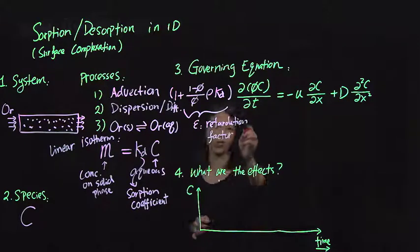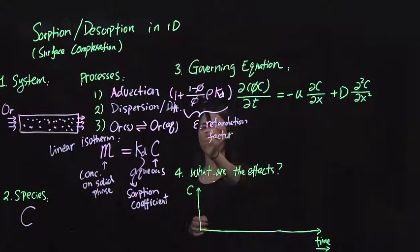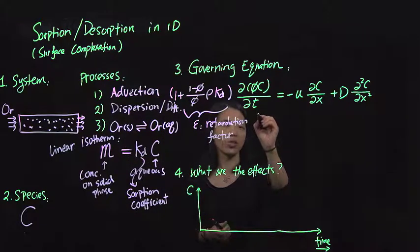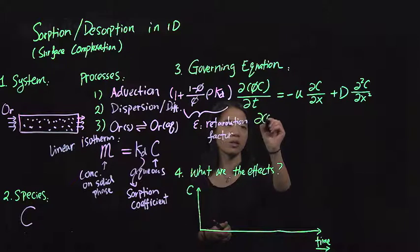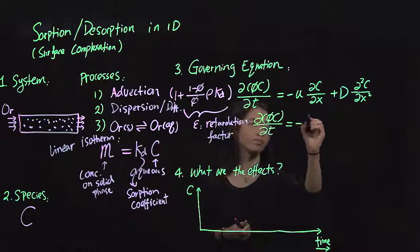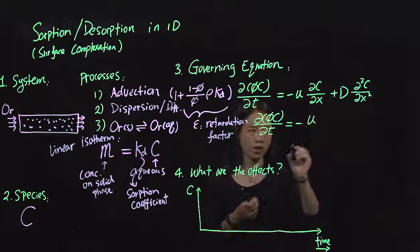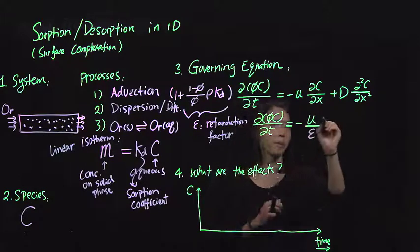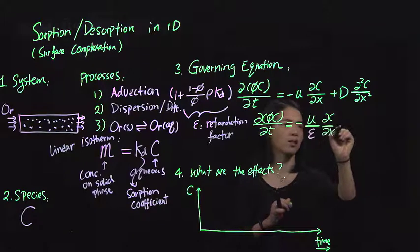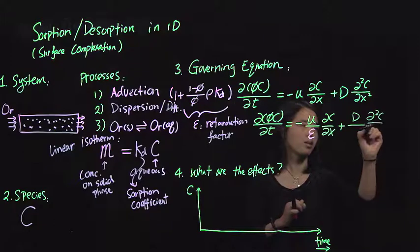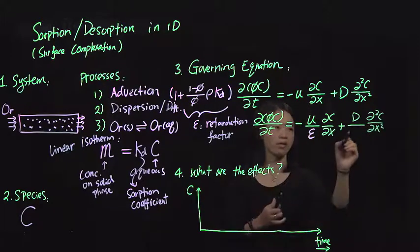So you would actually have an equivalent equation, which would be this. But you would have minus u, and then divided by ε, ∂c/∂x, plus D. Again, here are the same.